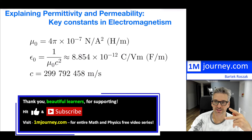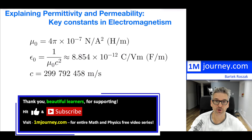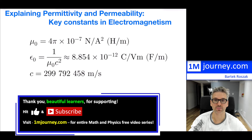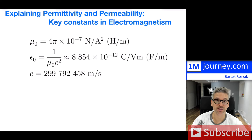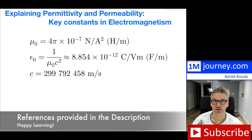There are two constants — the permittivity constant and the permeability constant — that keep coming up in electromagnetism. Let's take a look and try to explain what exactly these constants are, and how they are related to the propagation of electromagnetic waves, so EM waves.